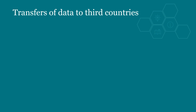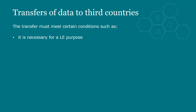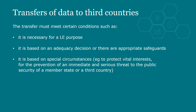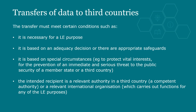Part 3 Chapter 5 deals with the transfer of personal data to third countries or international organisations. It specifies that the transfer must meet certain conditions, such as it is necessary for a law enforcement purpose; it is based on an adequacy decision or there are appropriate safeguards; it is based on special circumstances, for example, to protect vital interests; and the intended recipient is a relevant authority in a third country, a competent authority, or a relevant international organisation. There are also provisions for transfers which aren't to a relevant authority. International transfers will be covered in Module 15.